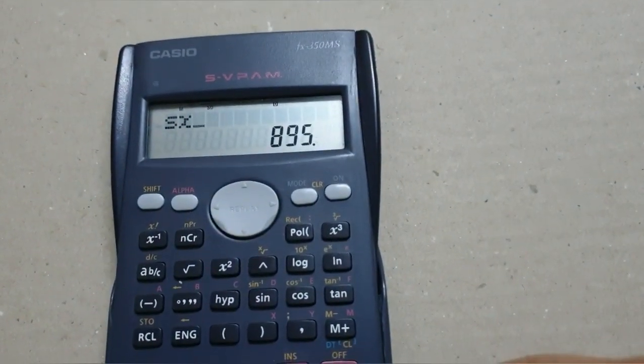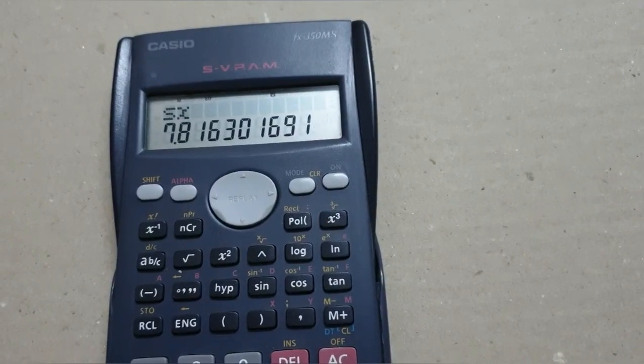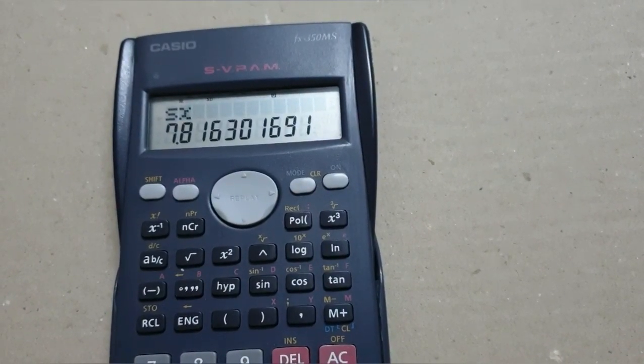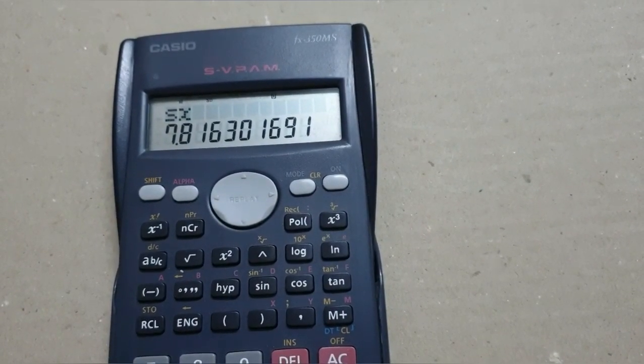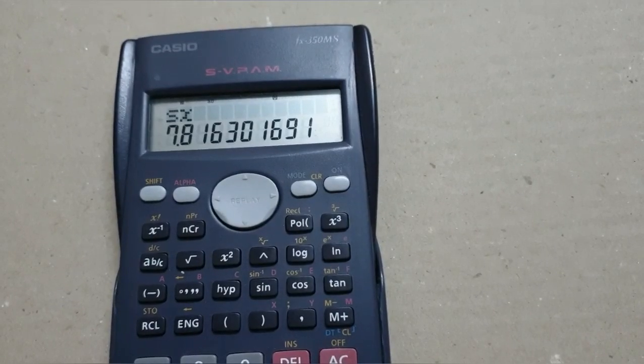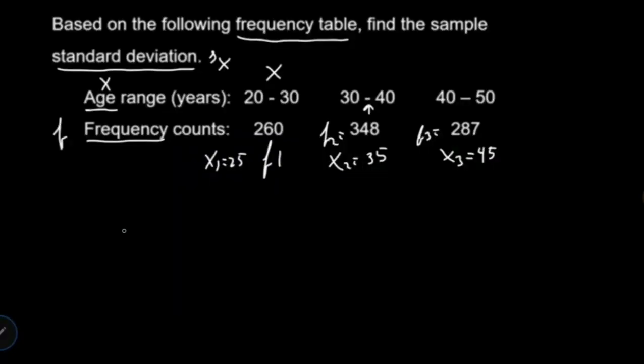s is equal to, press equal. Take 4 decimals. 7.8163. The answer is s of x is equal to 7.8163.